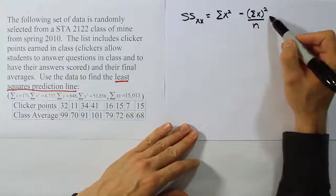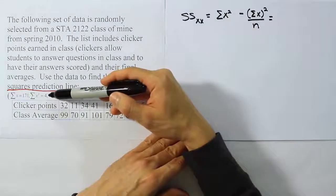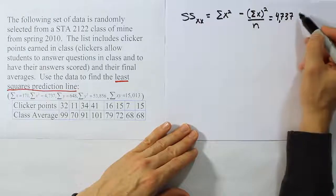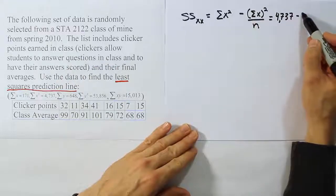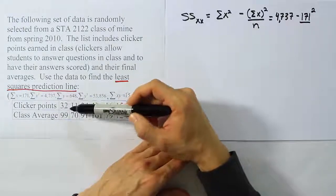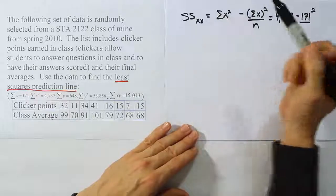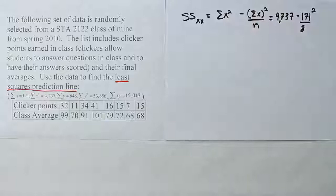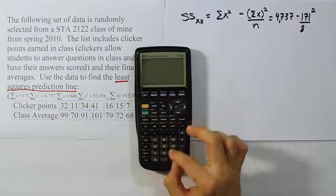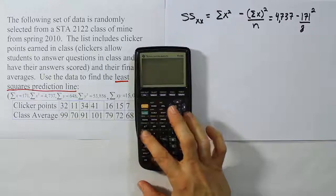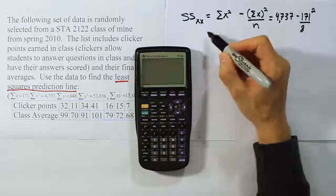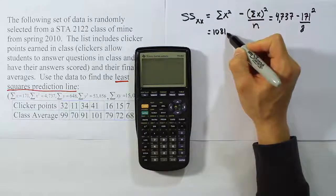We just plug in these values which we have given to us in the problem. We're told the summation of X squared is 4,737. The summation of X, the part in the parentheses, is 171. We're going to square that value and divide it by N, the number of ordered pairs we had in the problem. We have 1, 2, 3, 4, 5, 6, 7, 8 ordered pairs. Let's work that out. We have 4,737 minus 171 squared divided by 8. When we're done with that, we get the answer 1,081.875.